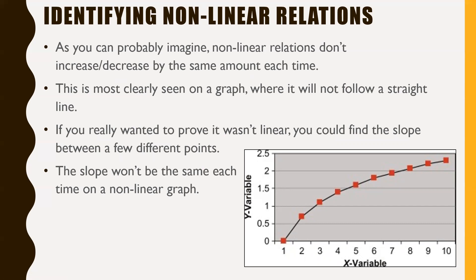Identifying nonlinear relations: nonlinear relations don't increase or decrease by the same amount each time. On a graph, it's clear as day — it will not follow a straight line. If you wanted to prove it wasn't linear, you could find the slope between a few different points. The slope between different segments will change over time, and if you do the algebra using rise over run, you would actually see the slope changes — and therefore it's not linear.